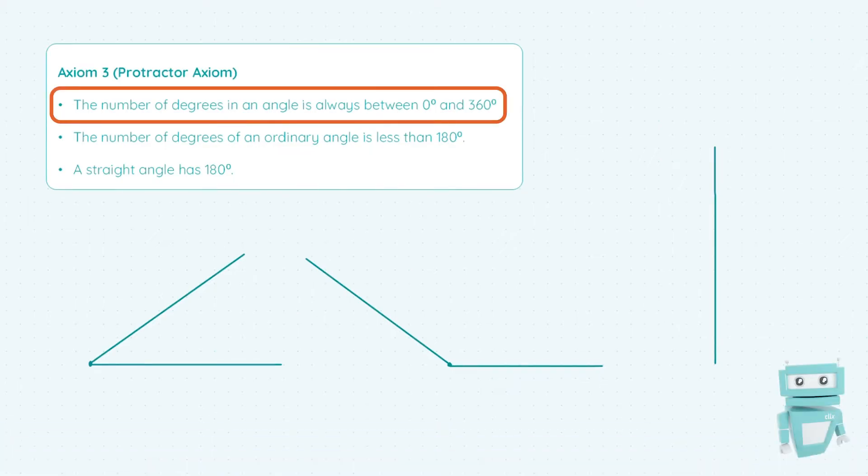The first point states that the number of degrees in an angle is always between 0° and 360°. For instance, over here on the left we have two angles. The first one is this angle here, which is obviously less than 360 degrees. We can also draw another angle outside like this, and this angle is also less than 360 degrees.